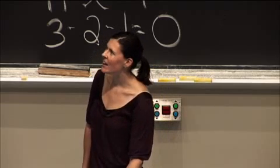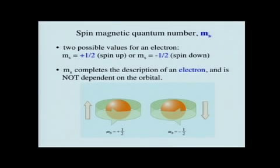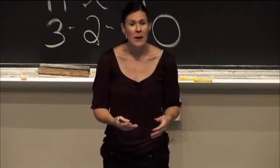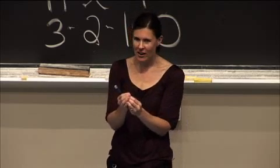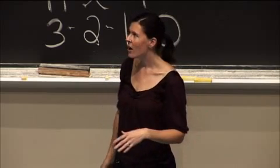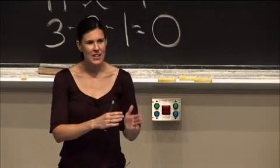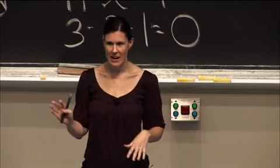The reason I like that analogy is it points out a very important part of spin: it's a description of the electron, not dependent on the actual orbital. We can completely describe an orbital with just three quantum numbers, but we have this fourth quantum number that describes something about the electron required for a complete description of the electron — that's the idea of spin. It's either going to be plus one-half or negative one-half.